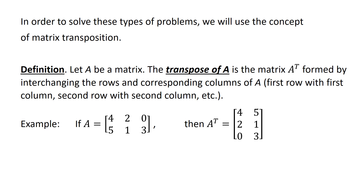If we have a matrix A, the transpose of A, which we call A-transpose, is formed by interchanging the rows and the corresponding columns of A. So the first row would interchange with the first column, second row with second column, and so on. If we have matrix A, which is a 2 by 3 with row 1 being 4, 2, 0, and row 2 being 5, 1, 3, then the transpose of A has row 1 become column 1 and row 2 become column 2. So we now have a 3 by 2 matrix with row 1 being 4, 5; row 2 being 2, 1; and row 3 being 0, 3.